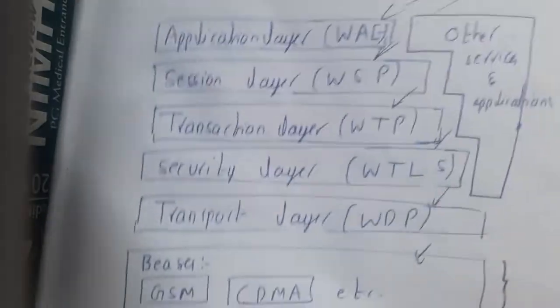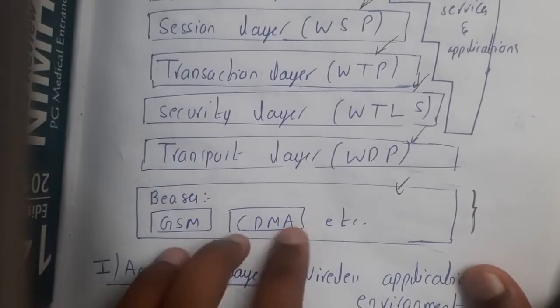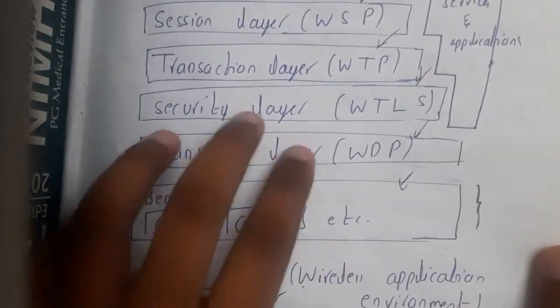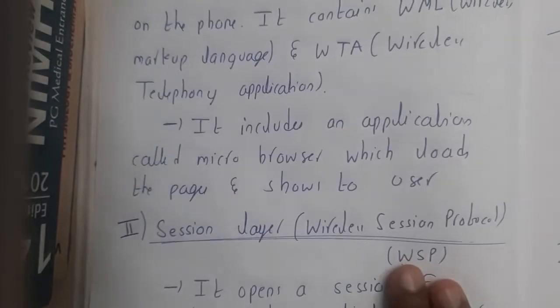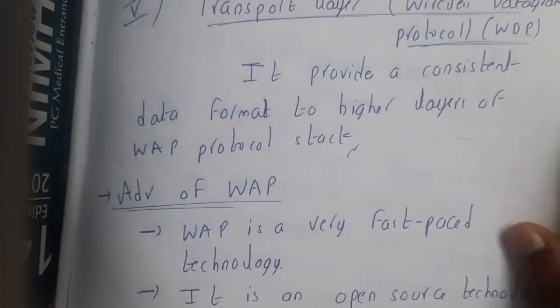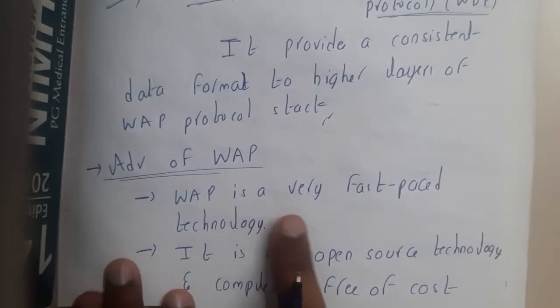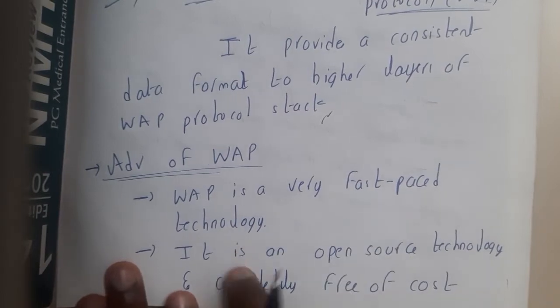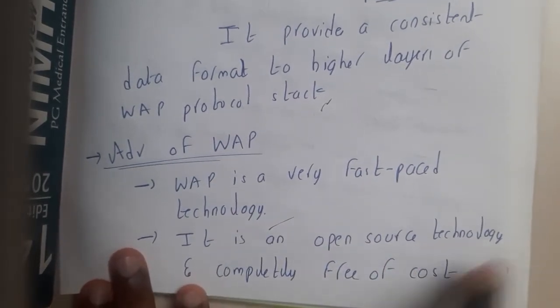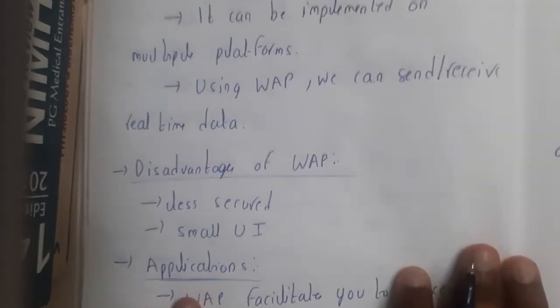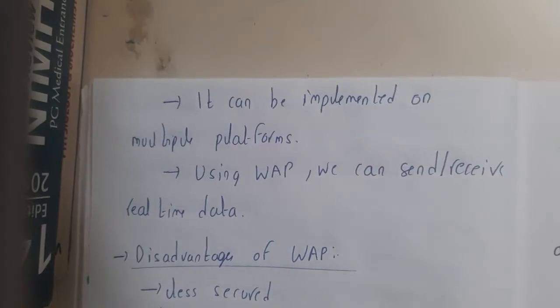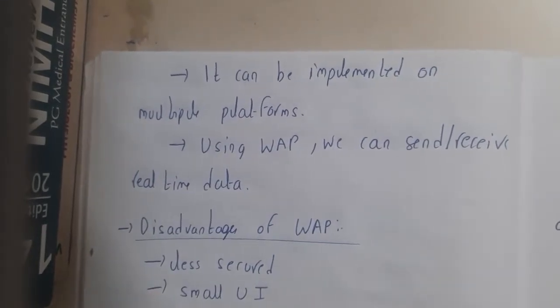The last layer is the bearer/base layer. These are the protocols used for communication between devices, and can use GSM, GPRS, or any similar technology. The major advantages of WAP are that it is a very fast technology, it is open source and completely free, so there is no payment required to use it, and it can be implemented on multiple platforms.